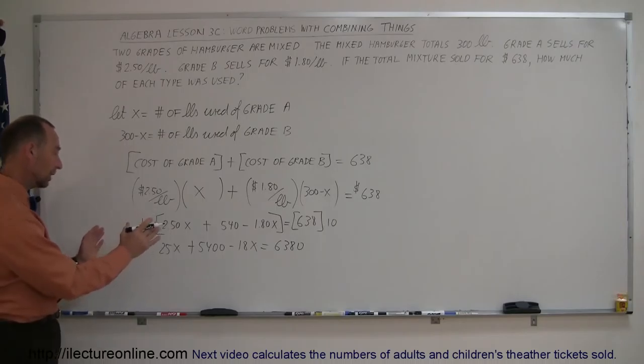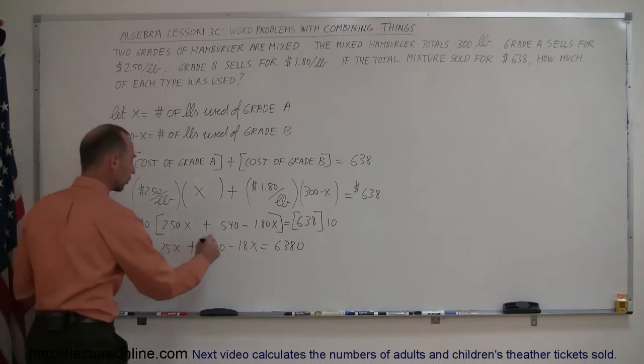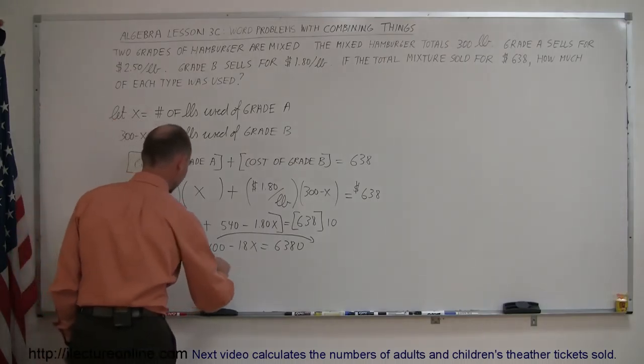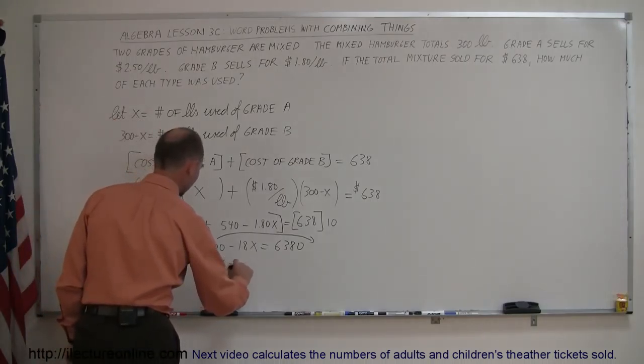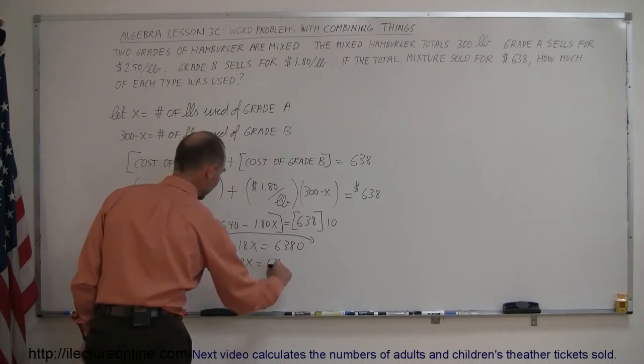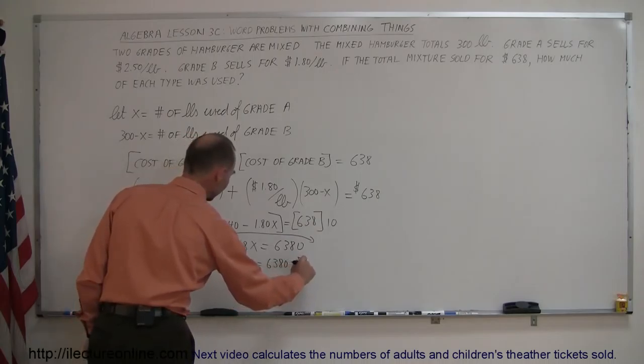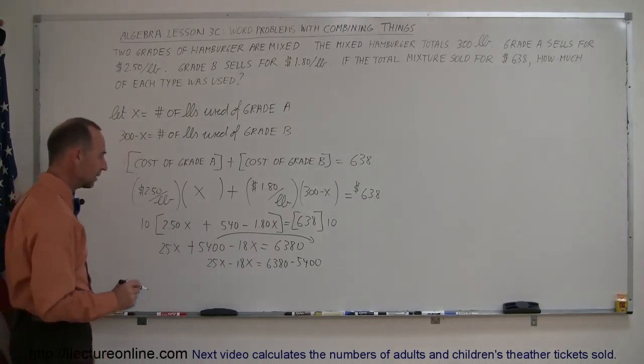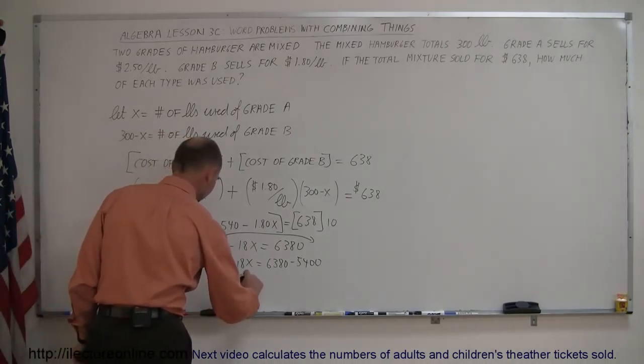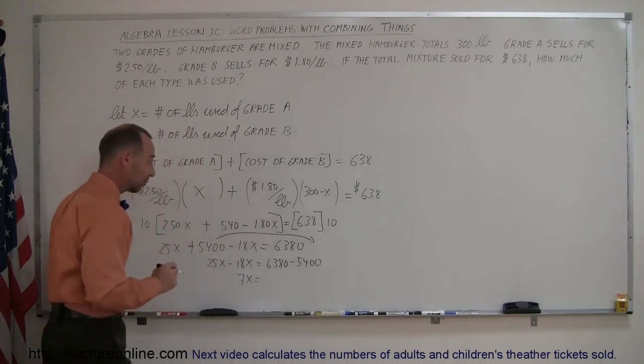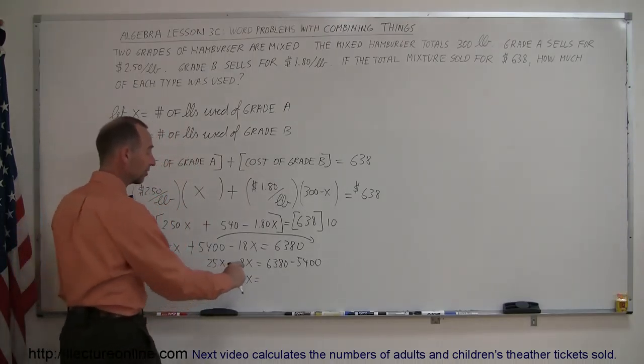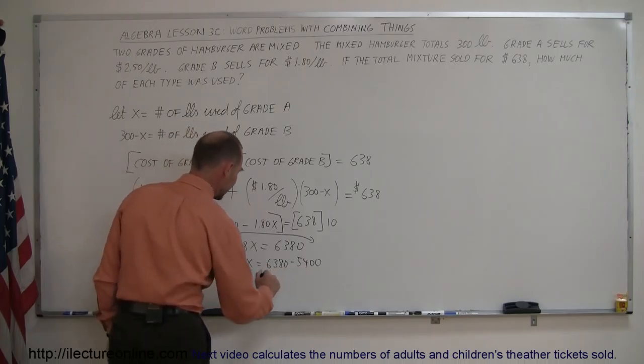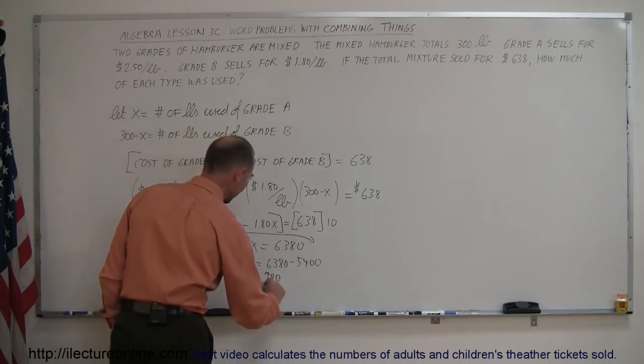We keep all the terms of the X on the left side of the equation. Move all the terms that do not have an X to the right side of the equation. So, here we get 25X minus 18X equals 6,380 minus 5,400. 25 minus 18 is 7X. And 6,380 minus 5,400. Well, if this was 6,400, the difference would be 1,000. If it's 20 less, that would be 980.